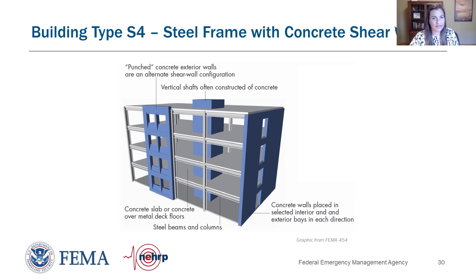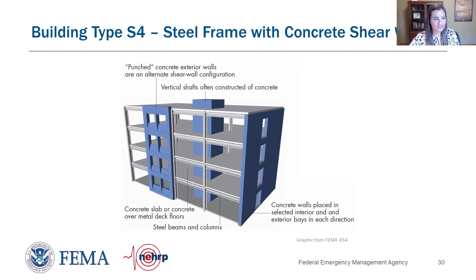Building type S4 consists of steel frames with concrete shear walls. Similar to S1 and S2, steel columns and beams support the vertical load, but now lateral resistance comes from concrete shear walls. A diagram shows the grid layout of beams and columns with exterior walls in blue providing the lateral system. The concrete walls are often at the interior shaft. If that shaft is eccentric to the center of the building, it may create torsion in the building plan, which can be damaging.